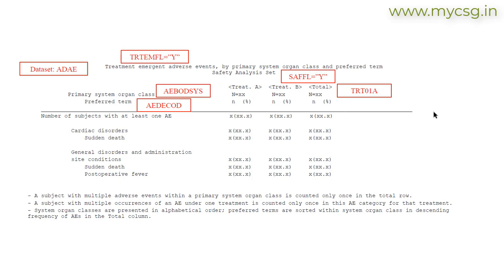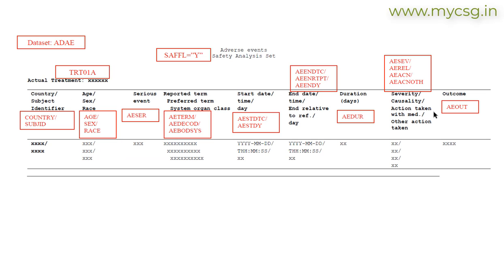Now let us see an example of an annotated listing. We have an adverse events listing based on the safety analysis set. The input data set is indicated as ADAE, and the filter condition to identify safety analysis set subjects is SAFFL is equal to Y. The listing is presented by each treatment group, with the actual treatment variable identified as TRT01A.